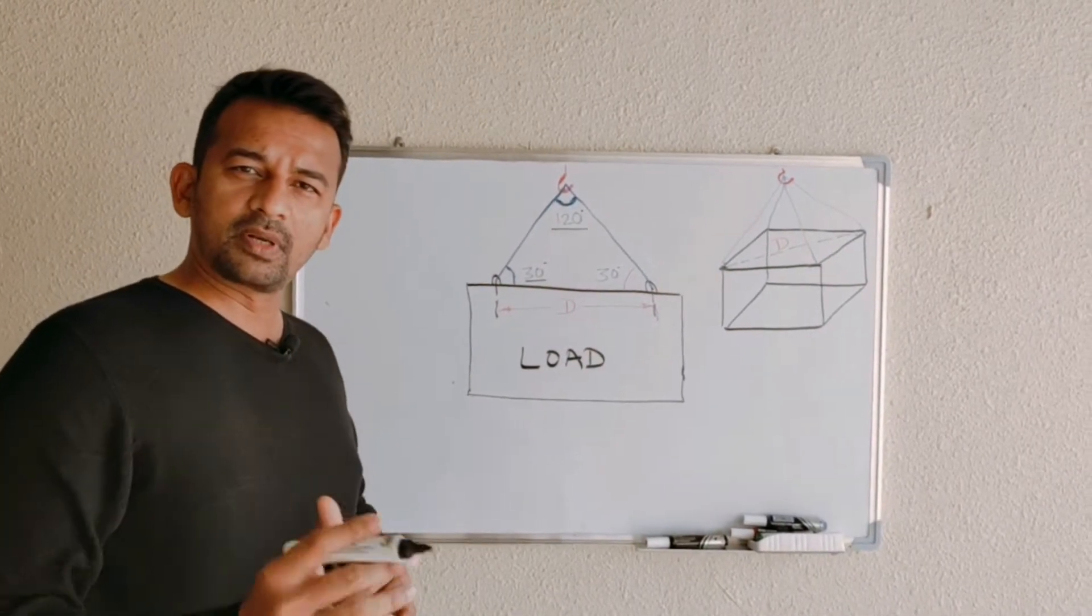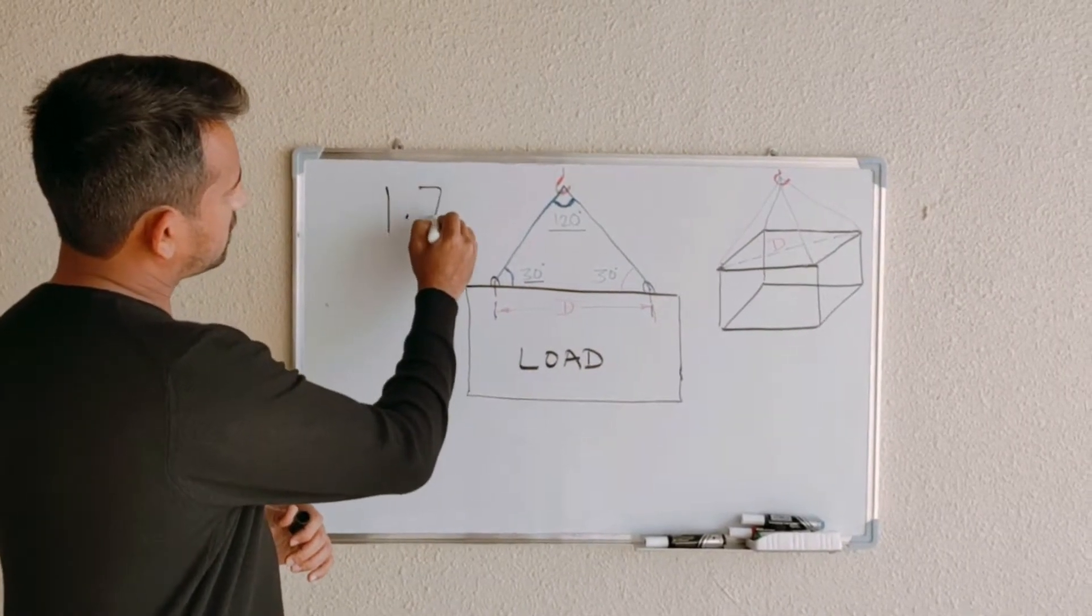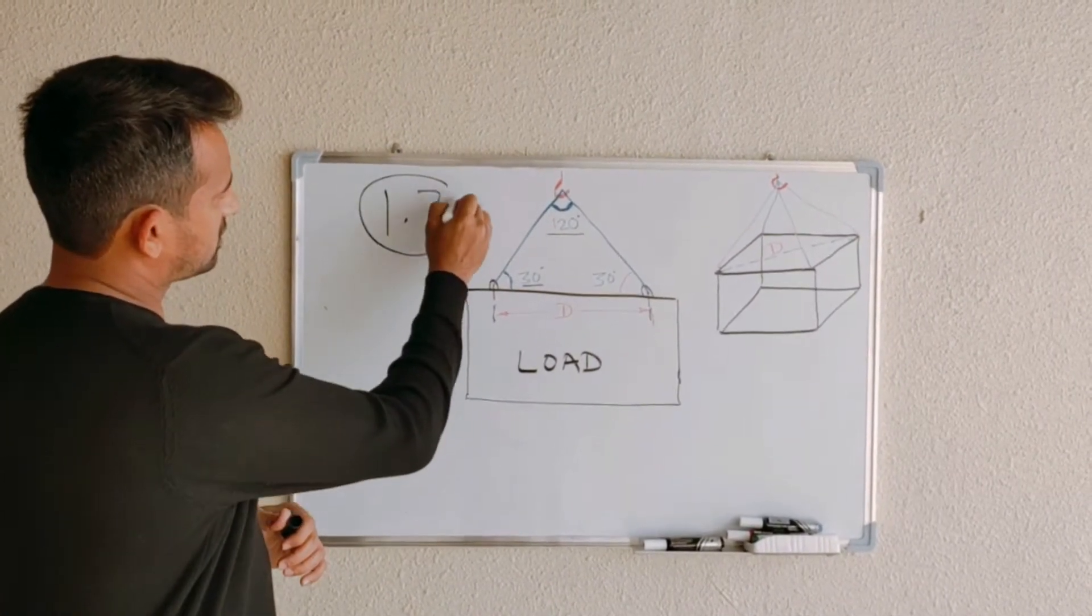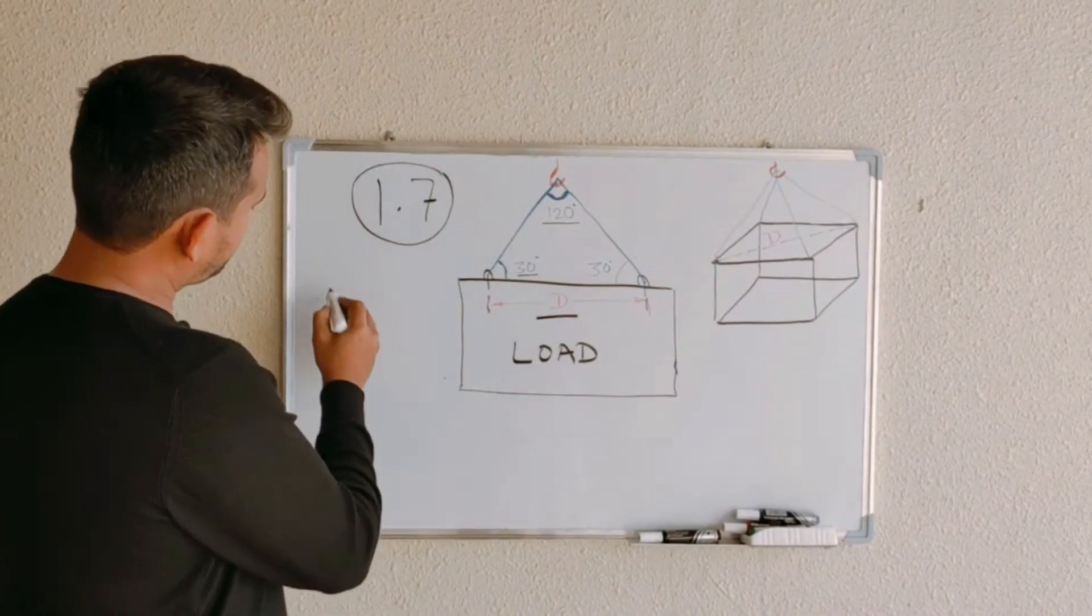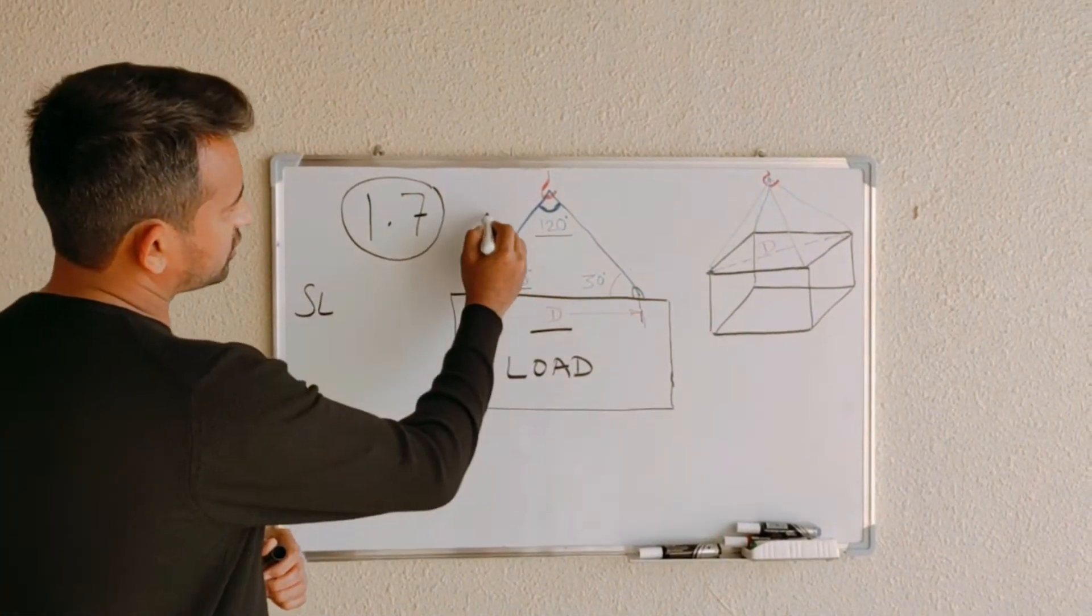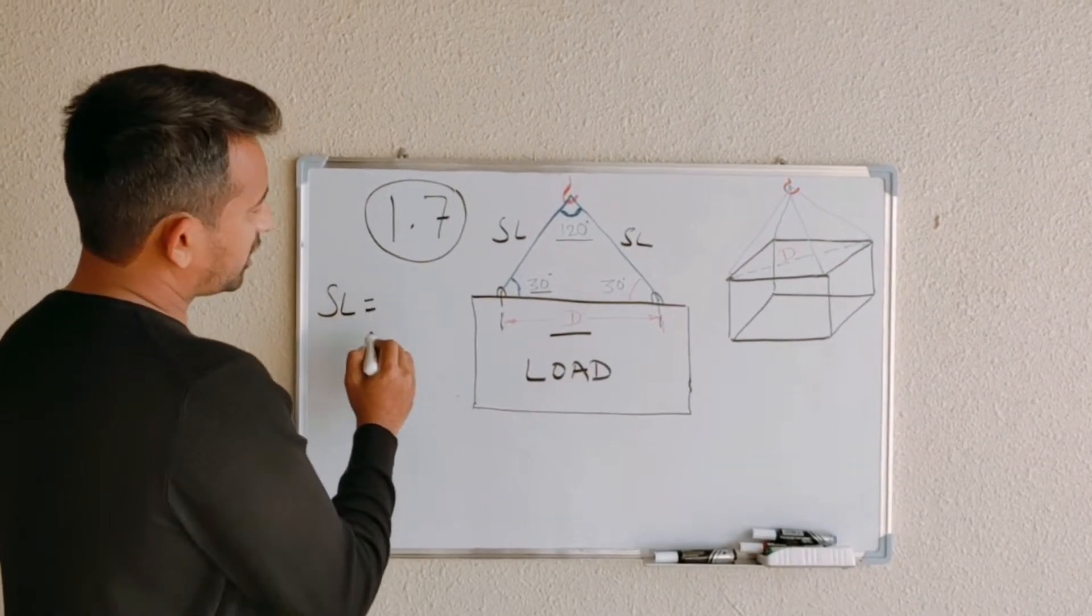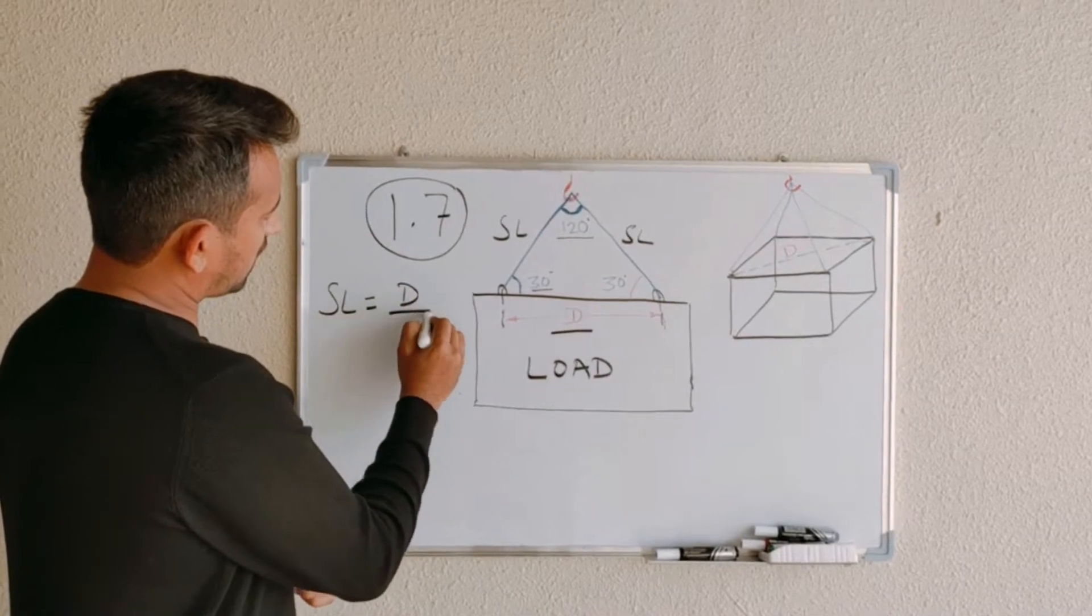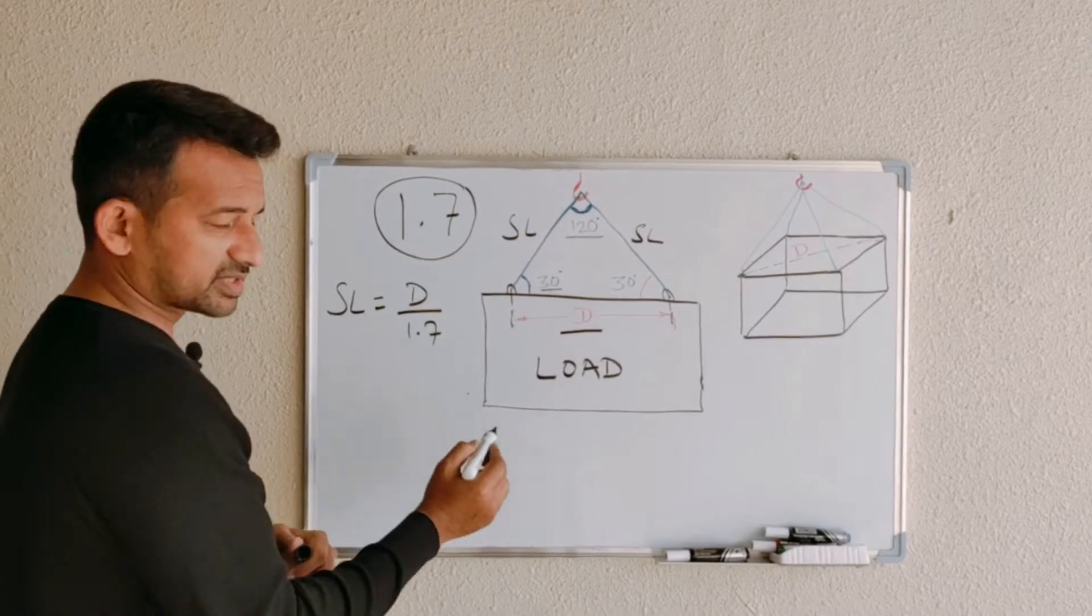You need to do simple mathematics. Remember 1.7. We have distance here, D. So sling length, SL, will be equal to D divided by 1.7.